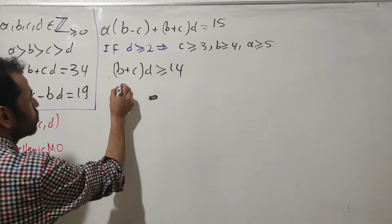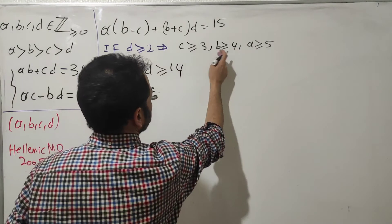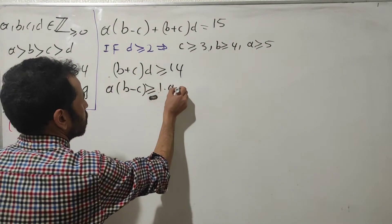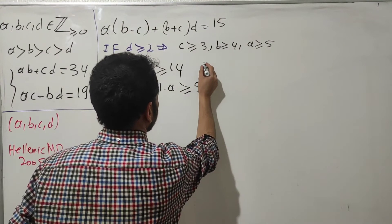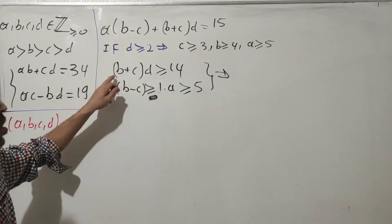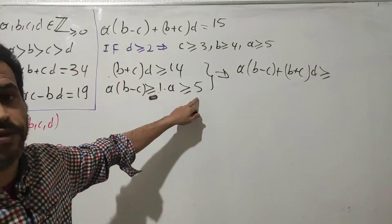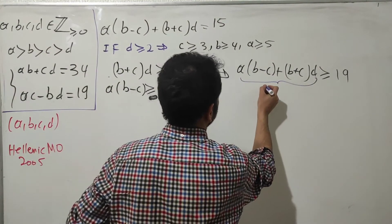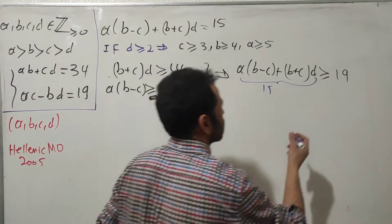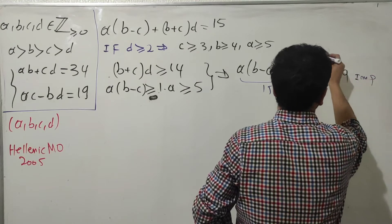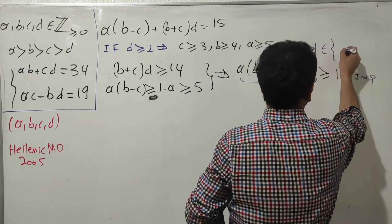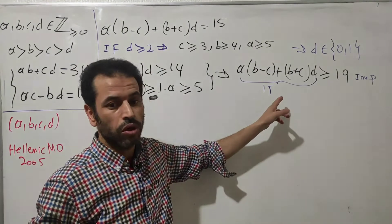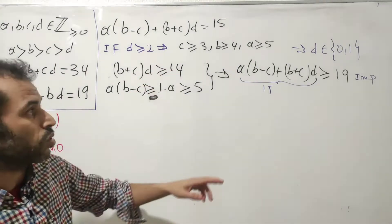Also, b − c ≥ 1, and multiplying both sides by a (which is ≥ 5) gives a(b − c) ≥ 5. Putting these two inequalities together, the sum is at least 14 + 5 = 19. But remember this sum must equal 15, and 15 < 19, which is impossible. This means d cannot be ≥ 2, so d belongs to the set {0, 1}.